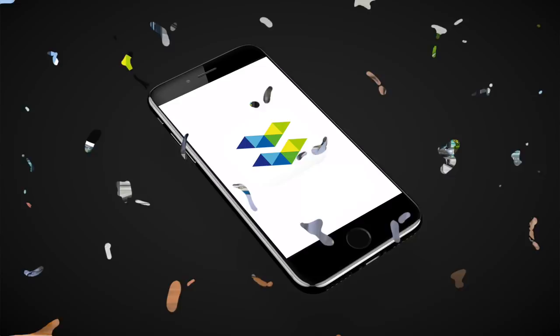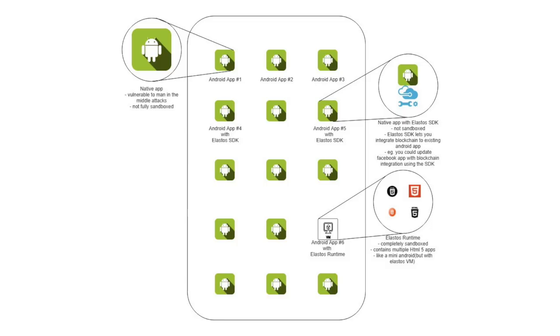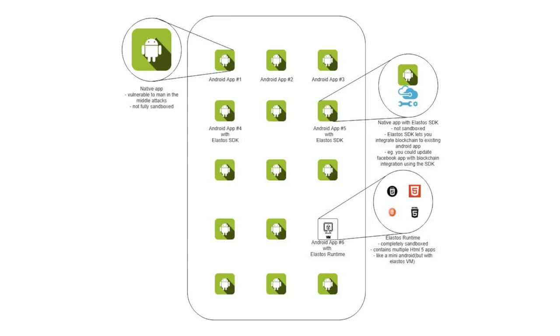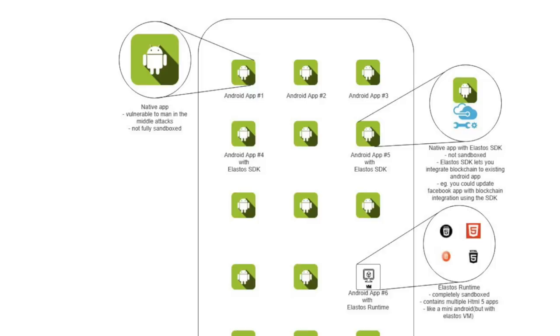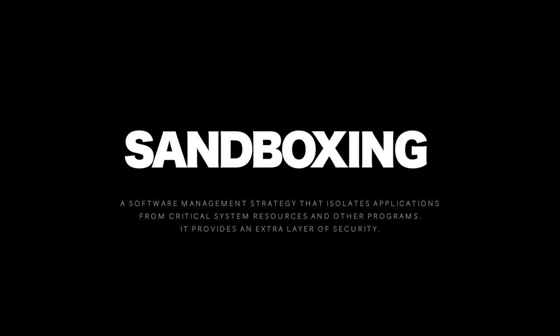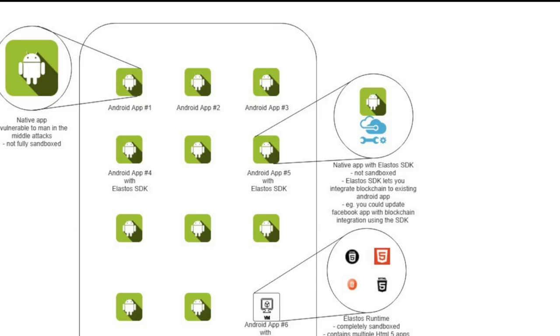Kieran P., another great Elastos researcher and evangelist, put together an image of how Elastos runtime will function on any Android device. You will have your regular apps, which are vulnerable to attacks and hacks because they cannot be fully sandboxed. There will be native apps which run the Elastos SDK — also not sandboxed, but letting you integrate blockchain functionality like ID Services. Then there are DApps which can be run with the Elastos runtime, like Vuechain and RIG Mobile Games, which are already in development.